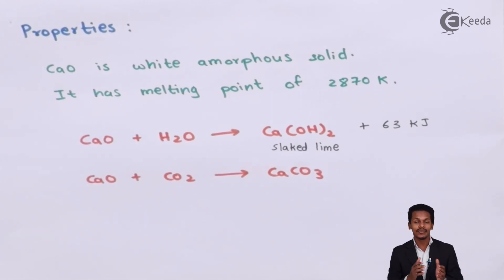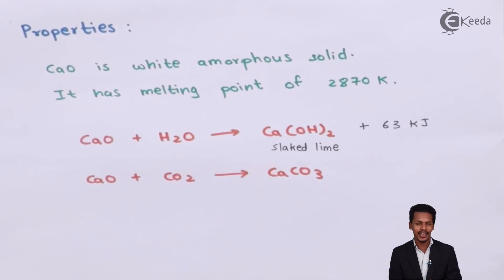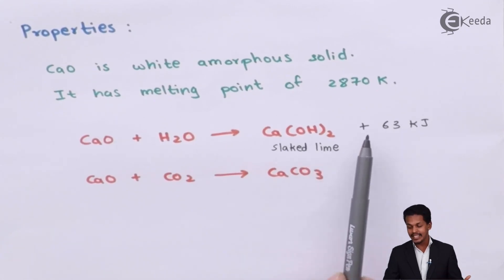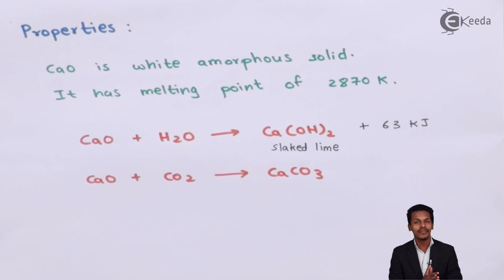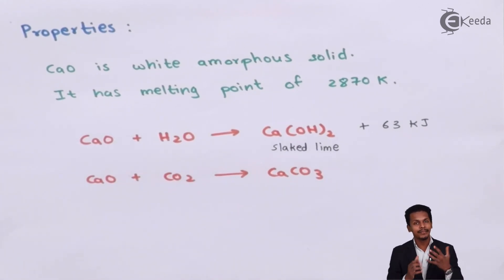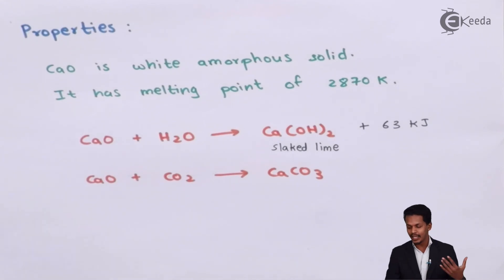Now let us move on to the chemical properties. The first reaction: whenever calcium oxide is treated with water, we get Ca(OH)2, which is basically known as slaked lime. In this reaction, 63 kilojoules of energy is liberated per mole of calcium oxide dissolved in water. This is an exothermic reaction. This method of preparing Ca(OH)2 by dissolving calcium oxide in water is known as slaking of lime.